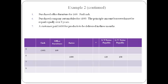A customer paid the company ahead of delivery and cash is increased. The goods will be provided in three months, and therefore the company owes the customer. A liability called unearned revenue is incurred.